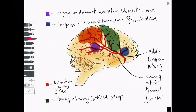We can now piece this information together to predict the symptoms from an MCA stroke. The content already covered should have given you enough knowledge to work out what the symptoms are likely to be, given that you know the location of the infarct and which hemisphere is affected. I'll go through some of the more common MCA strokes to help exemplify.